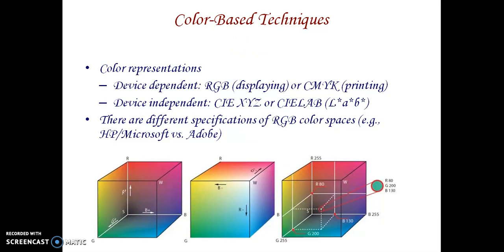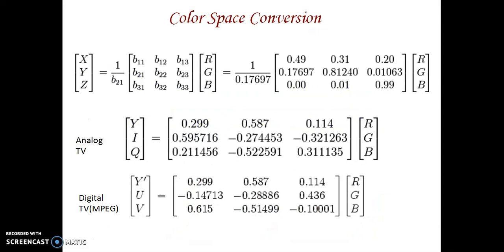In the color-based technique, we are going to use color representations: RGB and CMYK. For displaying, we use red, green, blue. For printing, we use cyan, magenta, yellow, and gray. There are also device-dependent colors, Lab color space, and different color spaces we can use. We are going to convert images between color spaces, such as converting to RGB images using various transformation matrices.